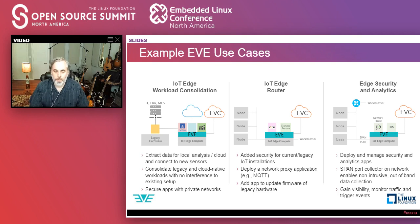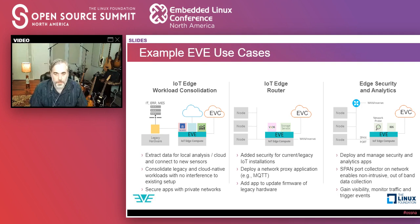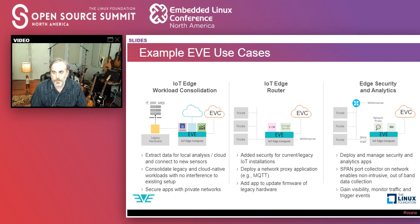Edge security analytics is another use case: a box with a span port sniffing traffic, running intrusion detection or AI/ML-based threat analytics, monitoring traffic and triggering events if something suspicious is going on — but not in the data path. Eve and whatever controller you use provides that universal abstraction layer for gaining visibility into what's happening on your network. These are the deployment patterns we see.